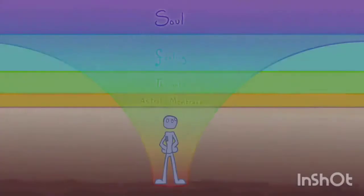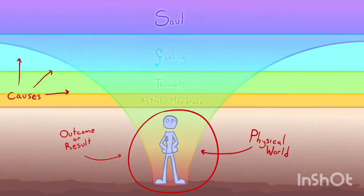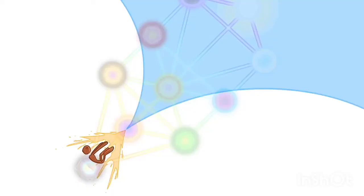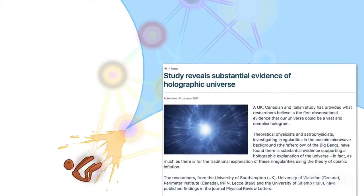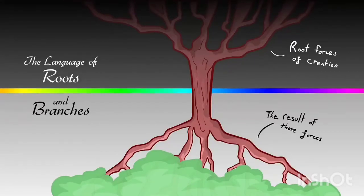Kabbalah describes the physical world we live in as being a world of outcomes, but not necessarily a world of causes. This physical plane we live in is the result of the invisible forces of nature, which create the projection of tangibility — a hologram that we have come to believe is solid. They call this concept the language of roots and branches. The roots are the root forces that bring about all things, and the branches are the results of these forces.